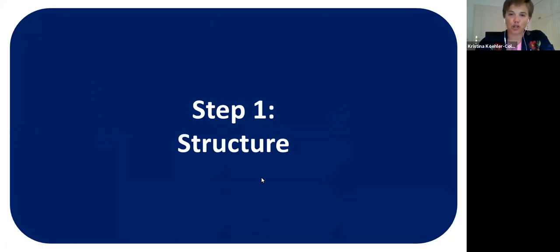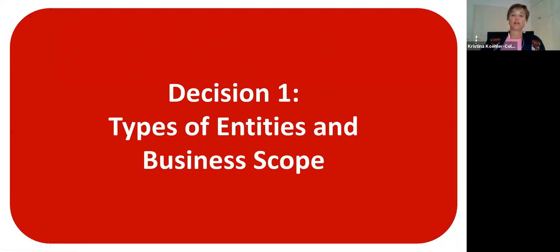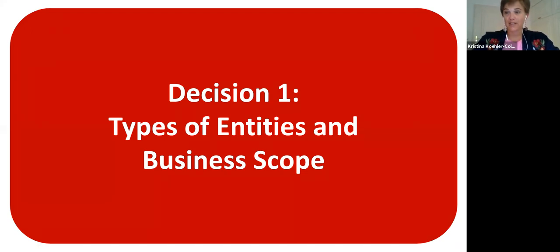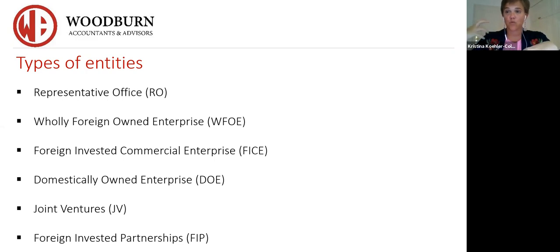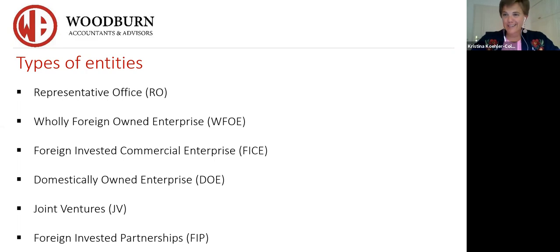Step one is structure. Decision one is around the type of entity you're establishing and the business scope needed to operate properly in the market. There are different types: a representative office, a WFOE (wholly foreign-owned enterprise), a FICE (foreign-invested commercial enterprise), a domestically owned enterprise, a joint venture, or a FIP — the latter usually applies to accountancy or law firms with a partnership structure, so most foreign investors won't need it.